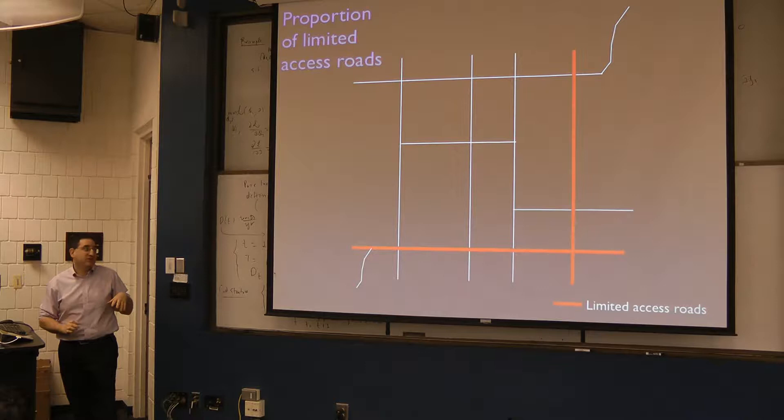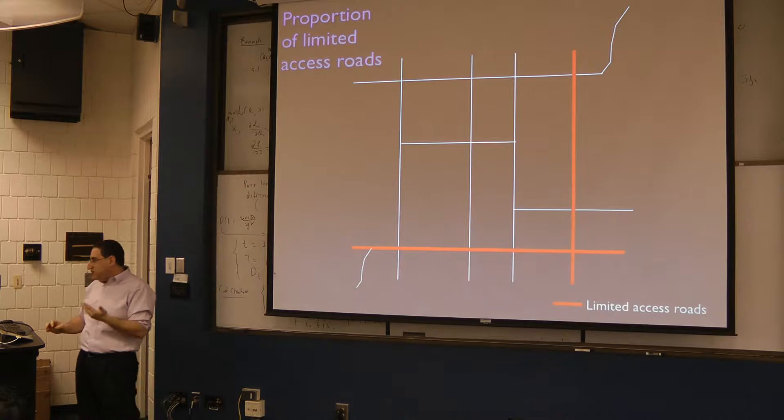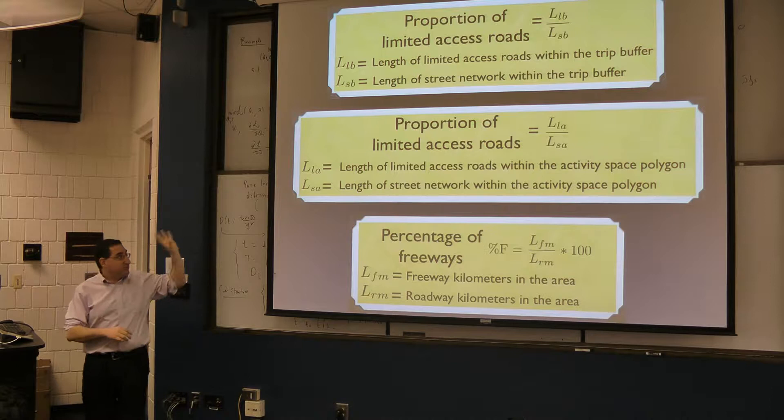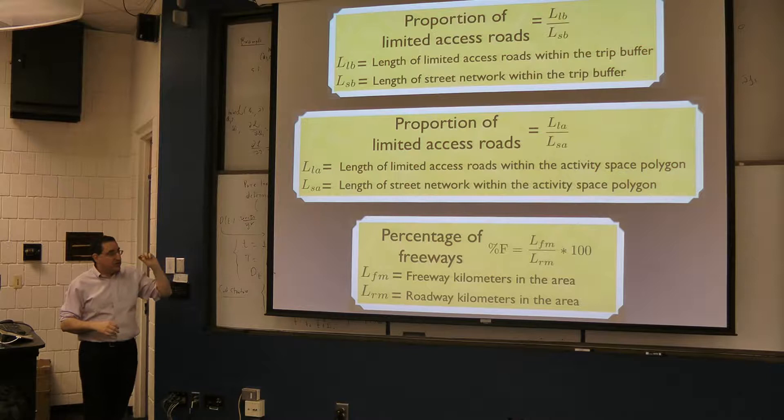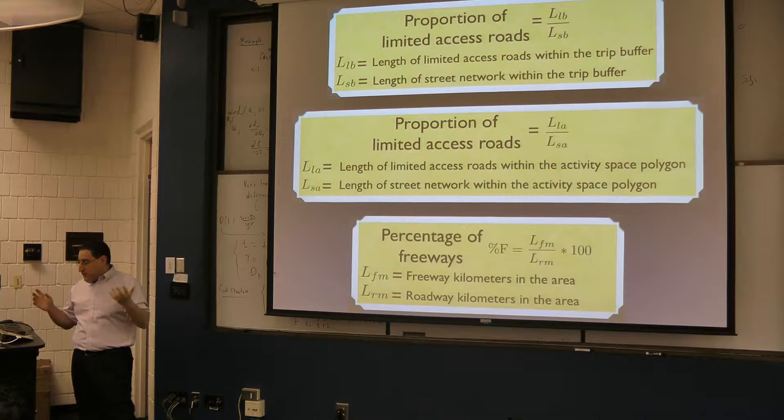Another measure is the proportion of limited access roads along your route. The more limited access roads there are, the fewer intersections there are, making the trip seem easier. We can measure this as a portion of total trip length, as a function of the network length within an activity space polygon, or for a metropolitan area.